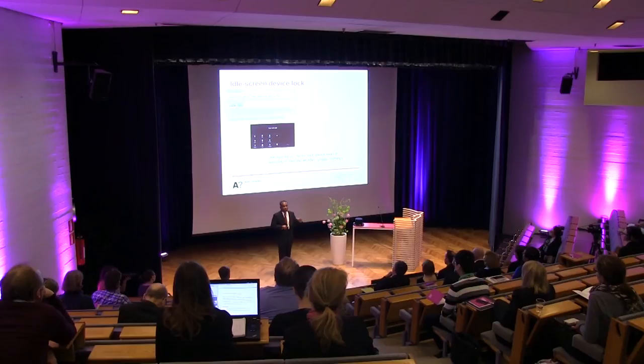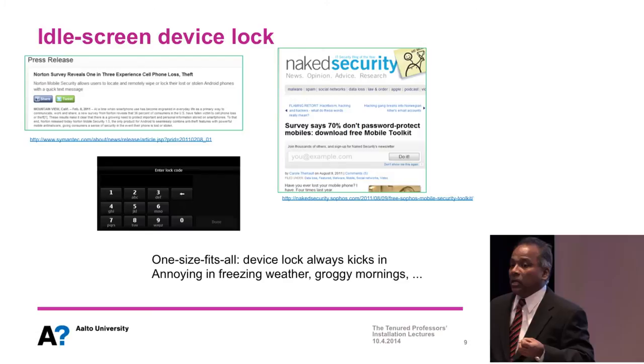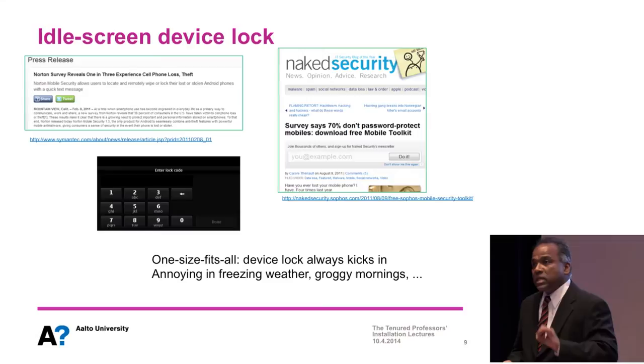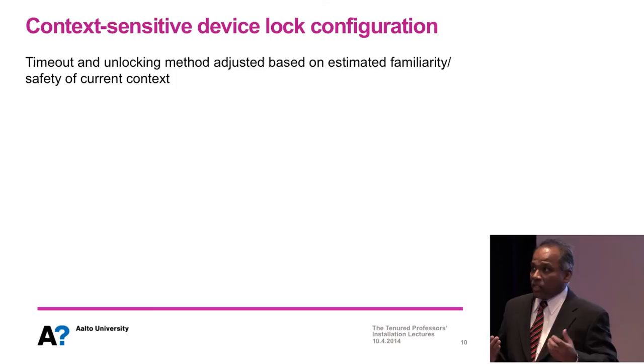For instance, if you wake up in the morning and want to make a call, you have to type in a password — or if it's freezing outside, you have to type a password. As a result, studies have found that most people don't actually use these protection mechanisms. On the other hand, with more sensitive information on mobile devices, not using a protection mechanism is dangerous. The question is: how can we design an idle screen device lock that is more acceptable to users without compromising security?